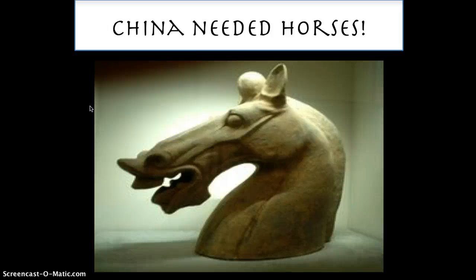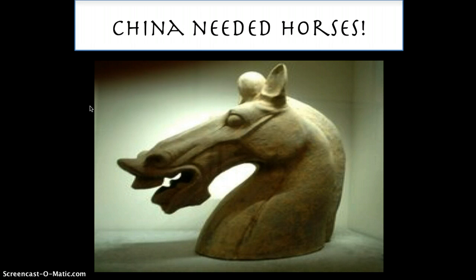It may seem strange to see the horse as the stimulus for the Silk Road's development under Chinese imperial sponsorship, but in the ancient world the horse was a cross between an M1 Abrams tank and a luxury car — both a prestige status symbol and a military necessity. As urban China was increasingly being pillaged and made to pay tribute by nomadic groups, it made sense for the Qin and later Han dynasties to establish relationships with nomadic peoples.